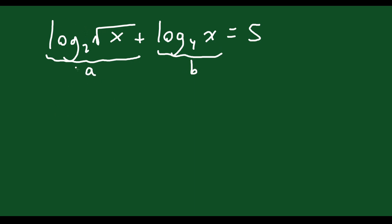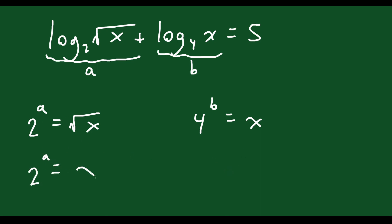I'm going to try something else: look at each log separately. I'll say the first is equal to a, and the second is equal to b. If the first one equals a, I could rewrite it as an exponential: 2 to the a equals the square root of x. And for the second: 4 to the b is equal to x. On the left, 2^a equals x to the 1/2. Over here, I really have 2 squared to the b, or 2 to the 2b, equals x.